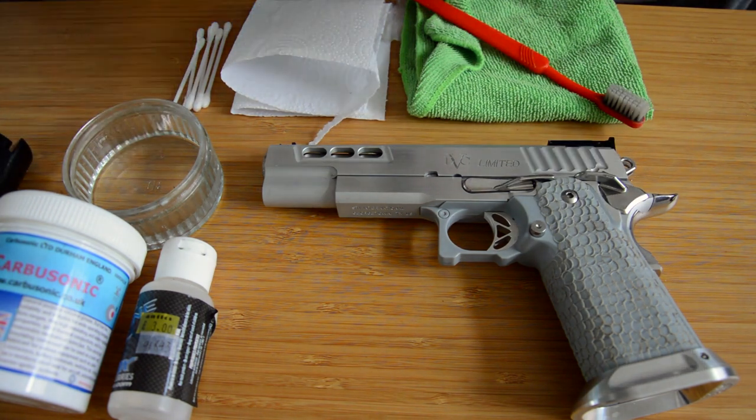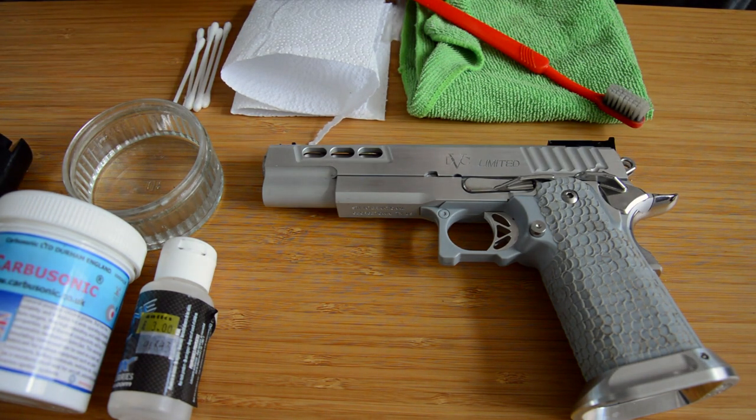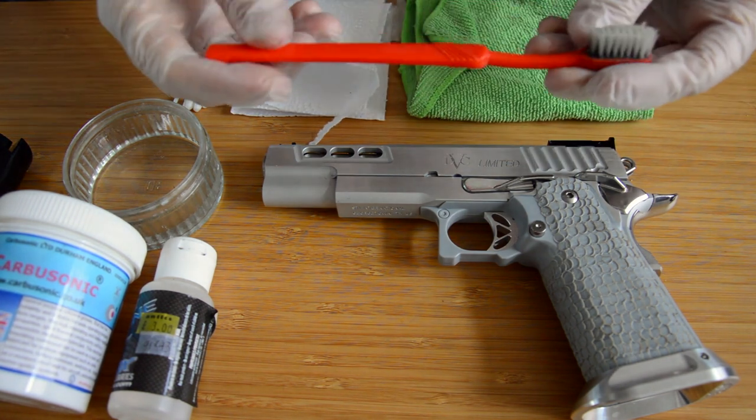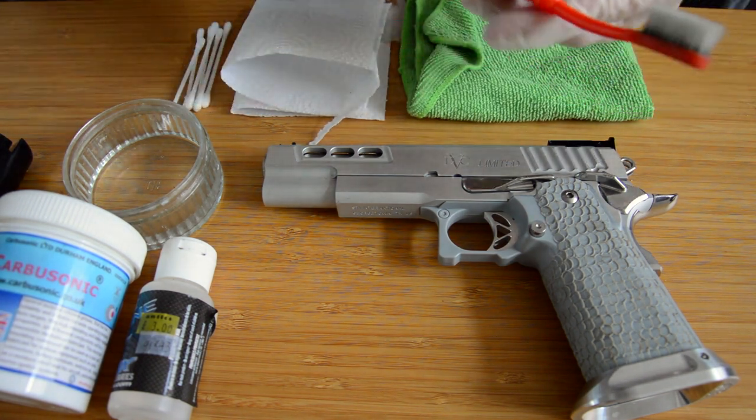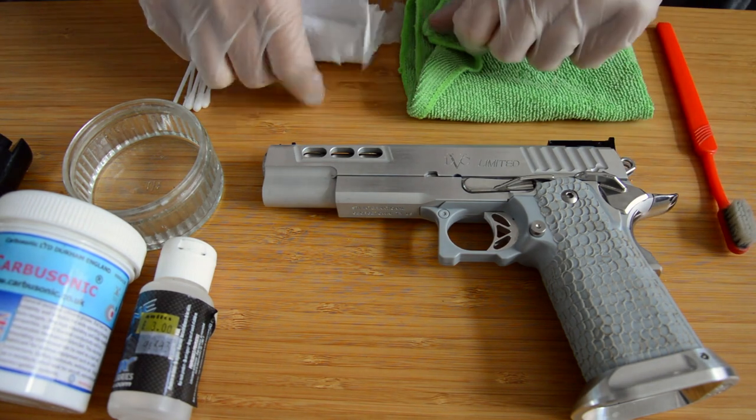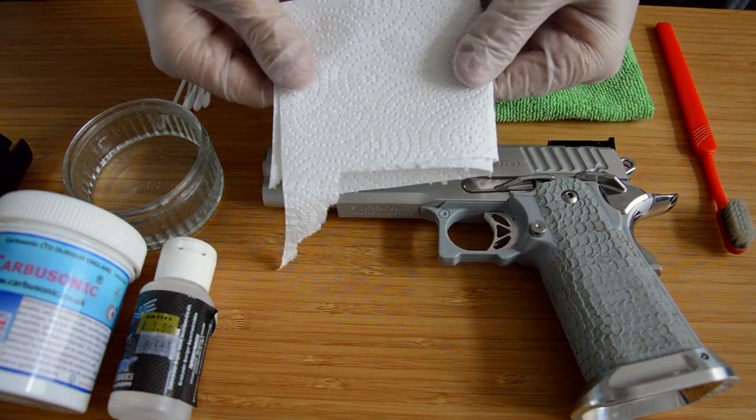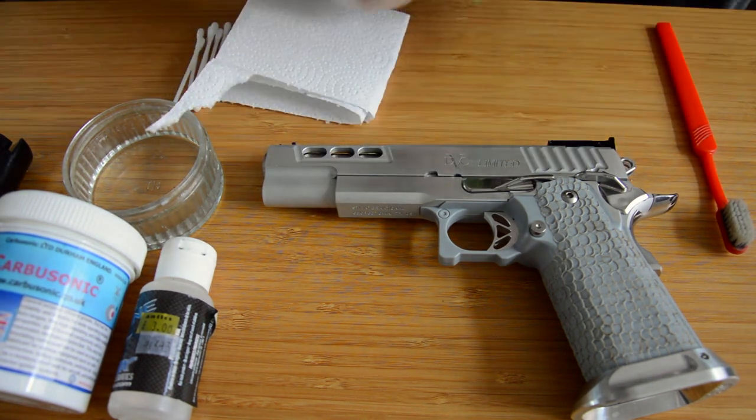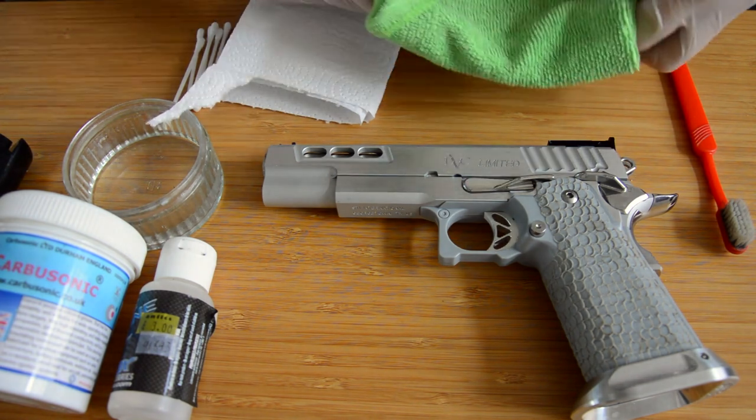So, aside from your gun, what else are you going to need? You're going to need a toothbrush, preferably one you're not going to stick in your mouth later. Possibly some paper towel. A microfiber cloth. It's a cheap thing, it helps.